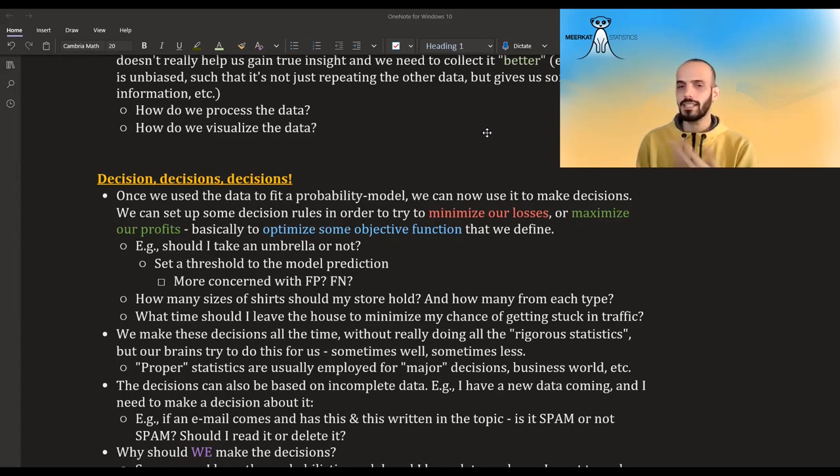And we can now use it to make decisions, right? We can set up some decision rules and we can set them up in different ways either to minimize our loss, maximize our profit, basically optimize some objective function that we have. And an example of this could be, should I take an umbrella today when I go outside or shouldn't I? So we might have the model and the model after I observed the data and took everything into consideration gives me some probability of rain today. And it could be that I set up a decision rule that above 50% probability, I will take an umbrella and below this, I won't take an umbrella.